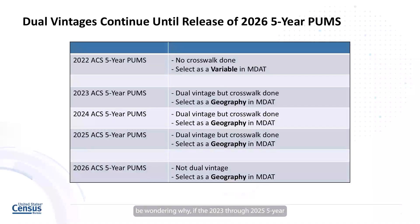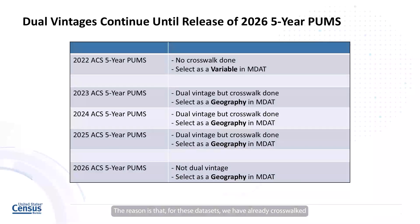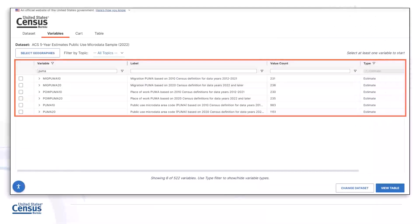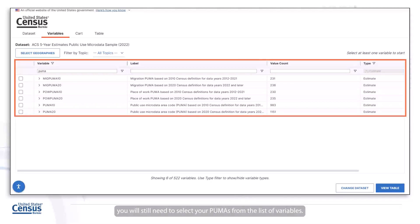So you may be wondering why, if the 2023 through 2025 five-year PUMS are still technically dual vintage, the PUMAs aren't being treated as variables. The reason is that for these datasets, we have already crosswalked the PUMAs in the microdata records using a 2010 to 2020 PUMA relationship file, so you don't have to worry about trying to match up the PUMAs on your end. This isn't applicable to the 2022 ACS five-year PUMS, so if you use that, you will still need to select your PUMAs from the list of variables.